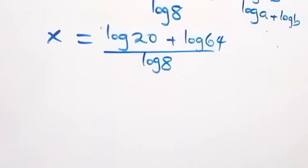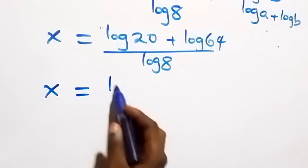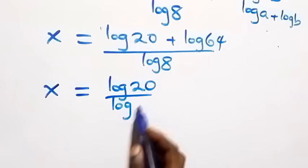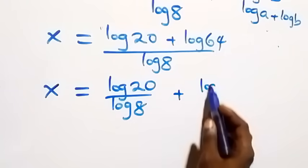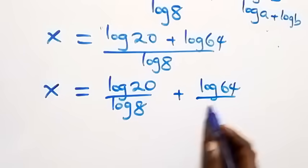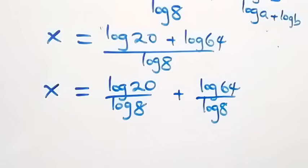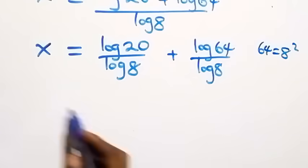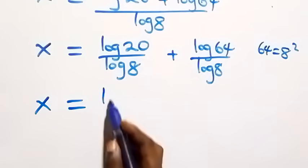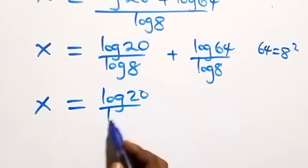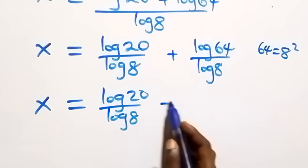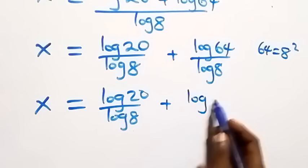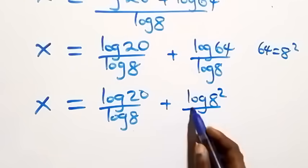The next step: we separate this into two fractions and have x equals log 20 over log 8, plus log 64 over log 8. We can express 64 as 8 times 8, which is 8 squared, so log 64 becomes log 8 squared over log 8.